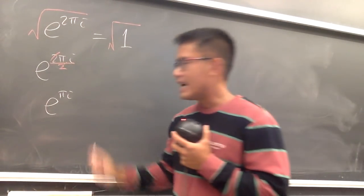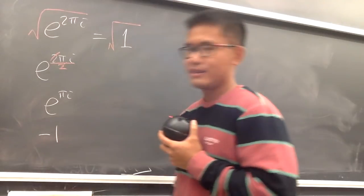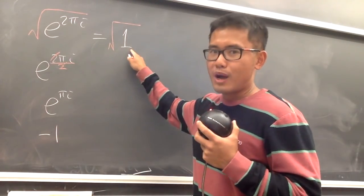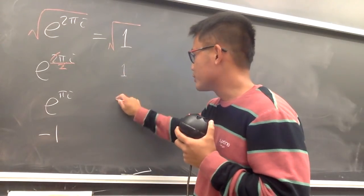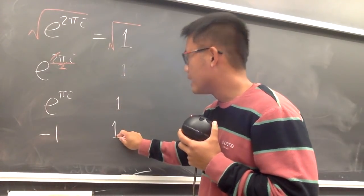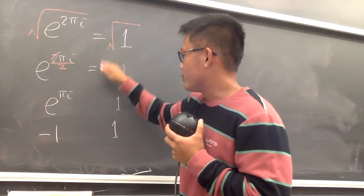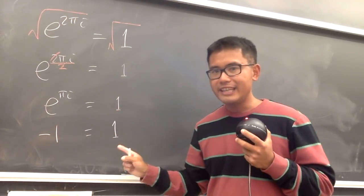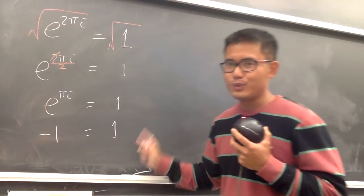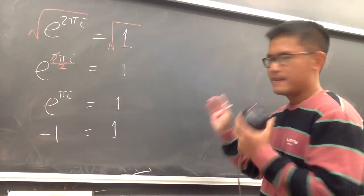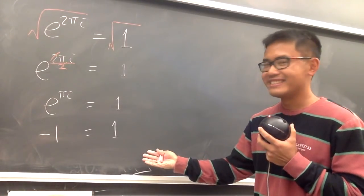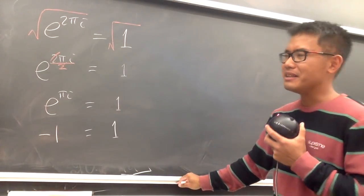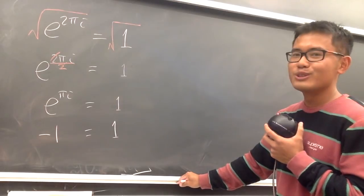So you see that on the left-hand side I have negative 1. And what is the square root of 1? Well, it's just 1. So I end up with negative 1 is equal to 1. Is there anything wrong with this? Comment down below — let me know why this is so strange.